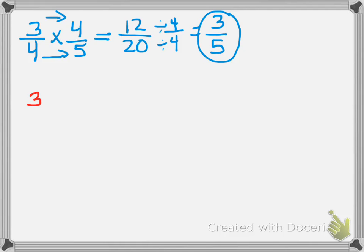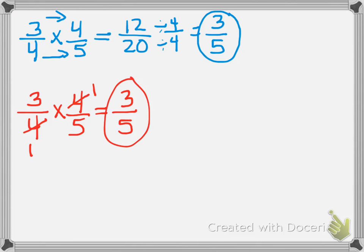Now let's solve it where we try to cross simplify. That is where we look at the numerators and the denominators, or the first floor and the second floor, and we see if any of those numbers have a factor in common. When I look at this, I know that the 4 and the 4 have a number in common, and that would be 4. 4 goes into 4 one time, 4 goes into 4 one time. When I multiply across, look at that, I get 3 fifths.